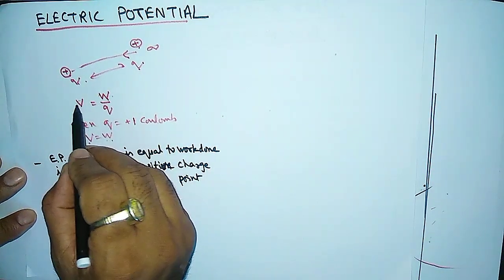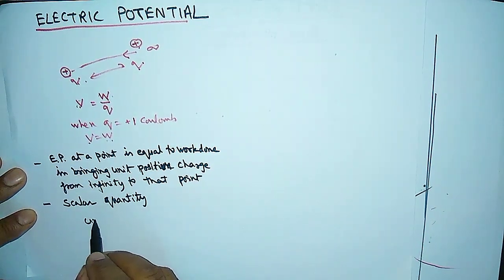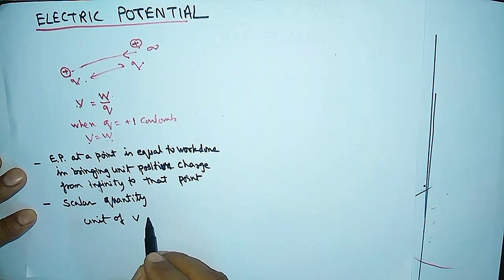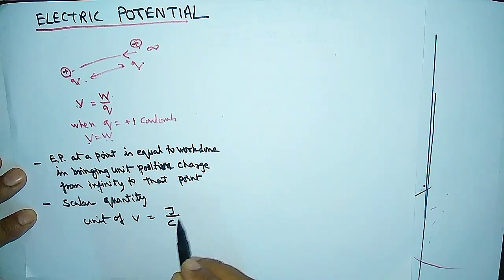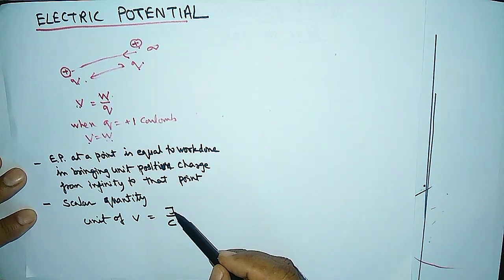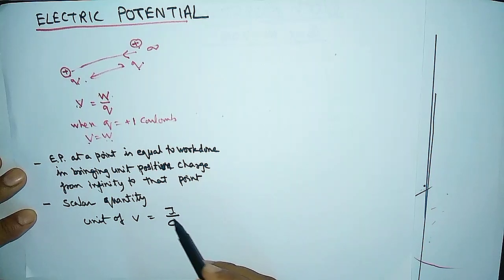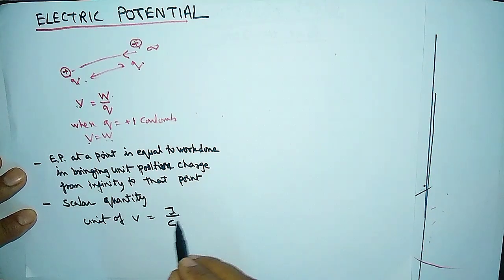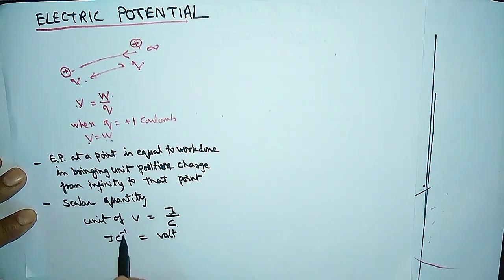The unit of electric potential: since V is equal to W upon Q, the unit of V is joule upon coulomb, because joule is the unit of work and coulomb is the unit of charge. This joule per coulomb is also known as the volt, which is the SI unit.